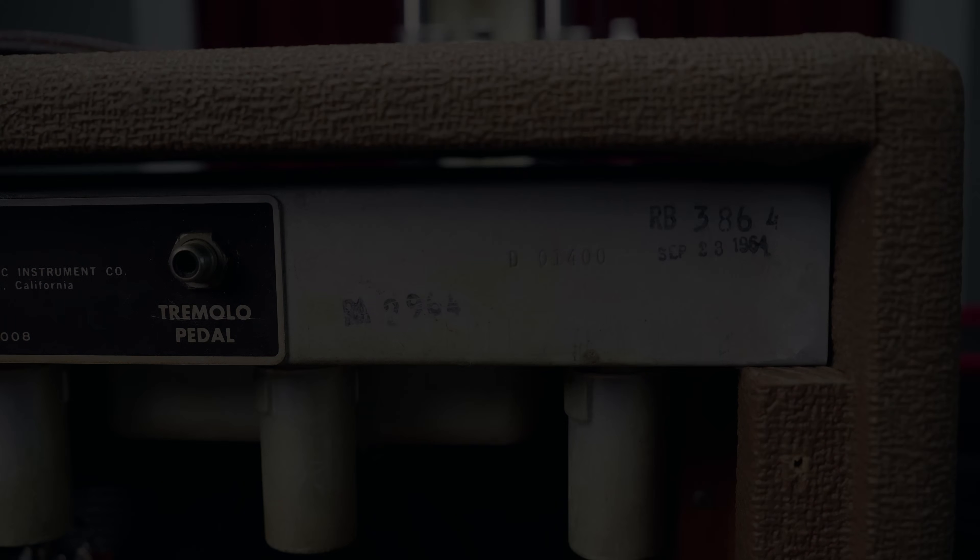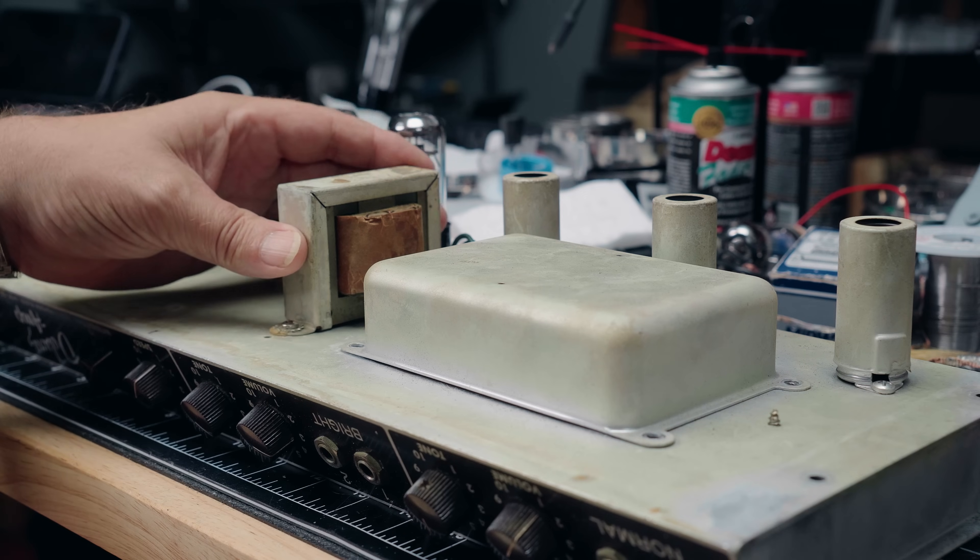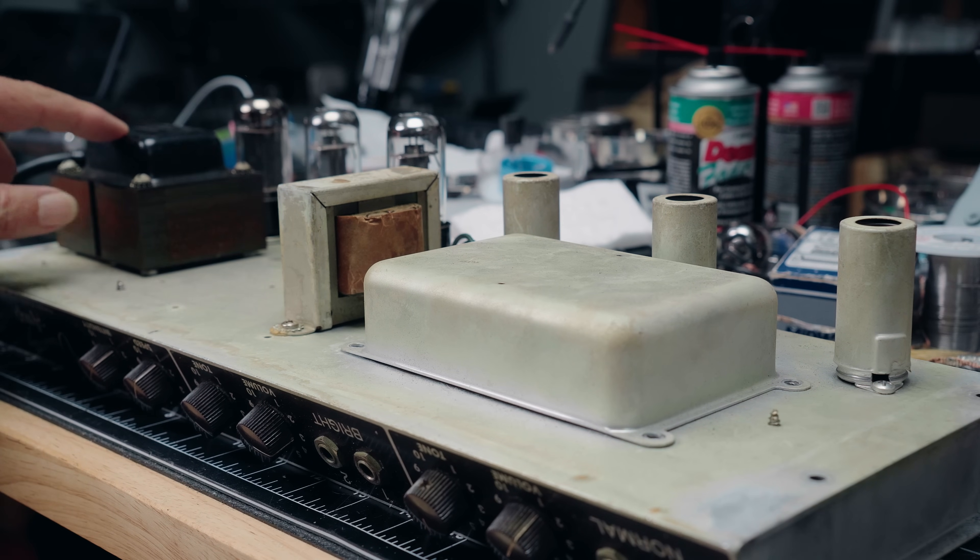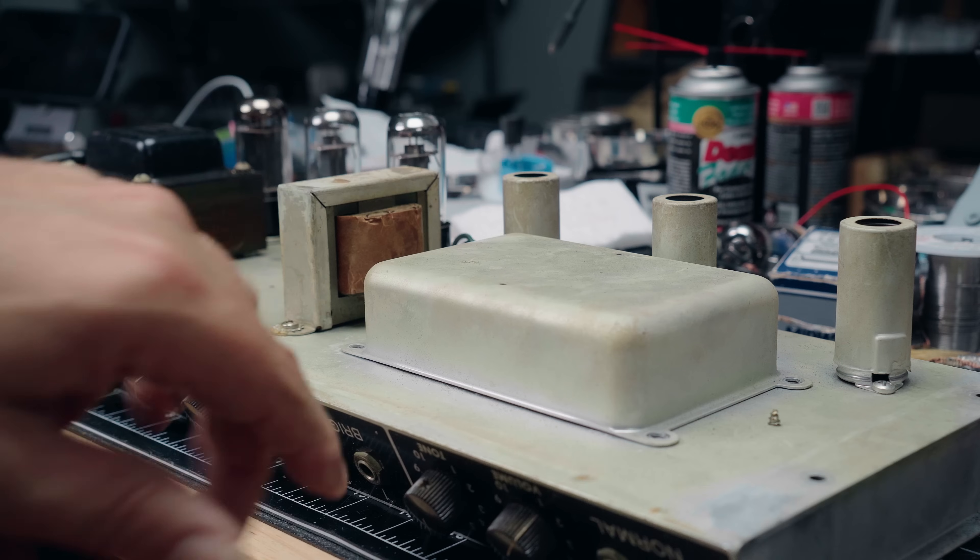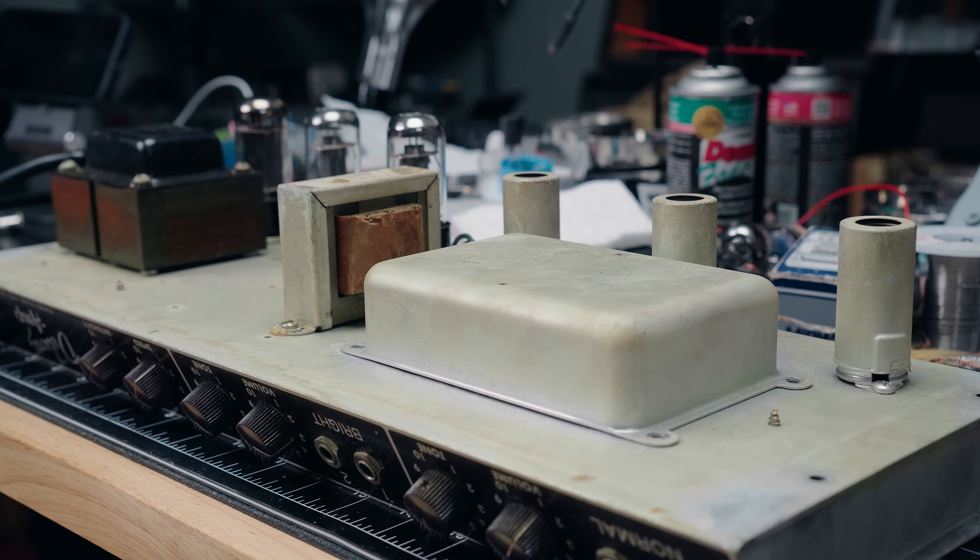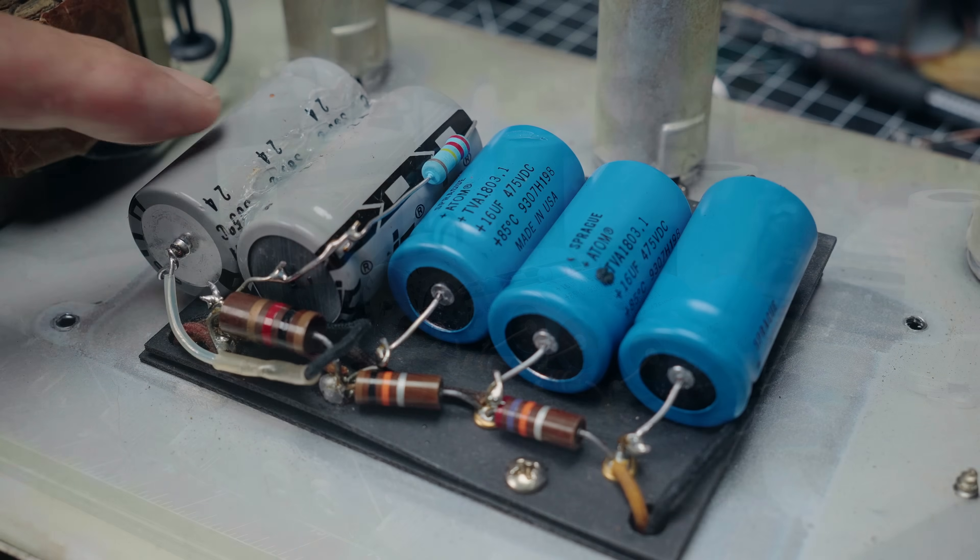End of September 1964 date stamp added on top of the tube chart, which is unusual. And the owner and I both suspect that this is an earlier amp that went back to the Fender factory in September of 64 for some kind of service. Let's take a look and see what that might have been. Well, the mystery just gets curiouser and curiouser. We've got a date code of 1960 on this output transformer. We've got a date code of 1965 on this power transformer. The stamps on the back of the chassis say 64.